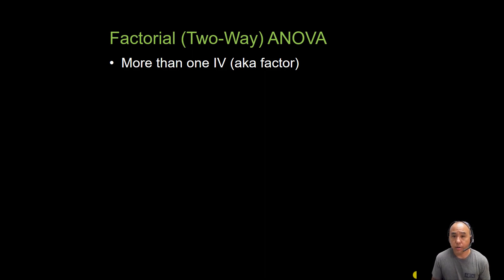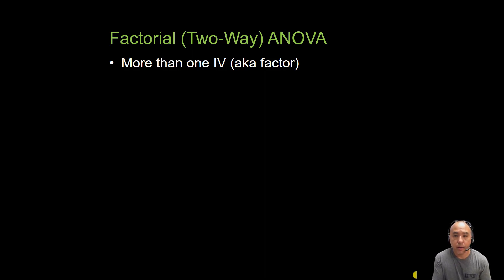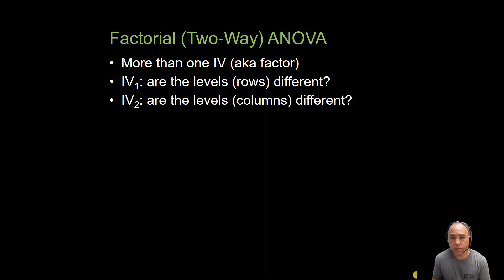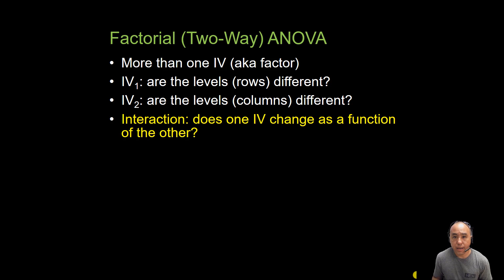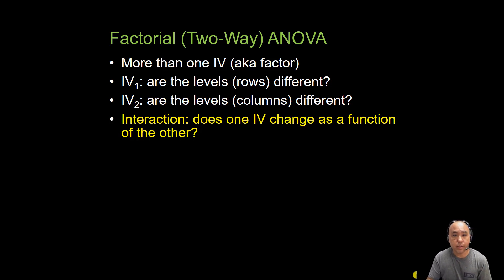More often than not in research, we're interested in multiple factors and see how that influences our outcome measure or our dependent variable. The questions are very similar to a one-way ANOVA — we want to know if there's a difference between different levels of the independent variable, what we call the main effects. But the main question answered with a two-way ANOVA is the interaction: is there an interaction between factors on the dependent variable?